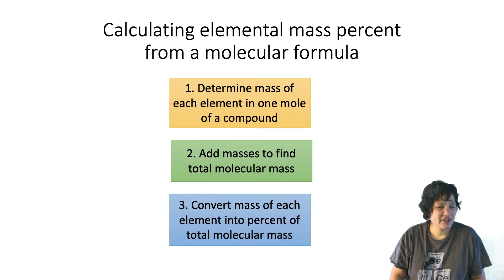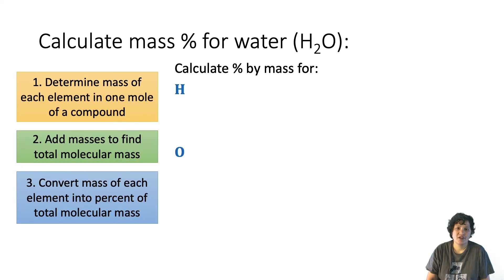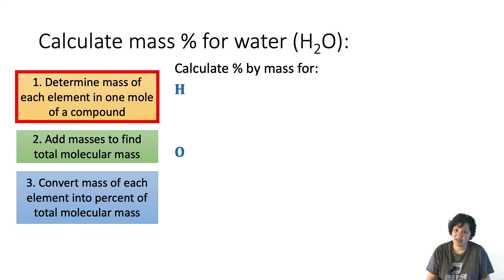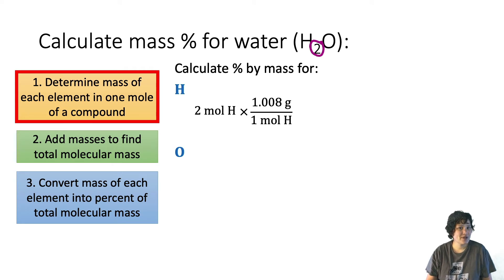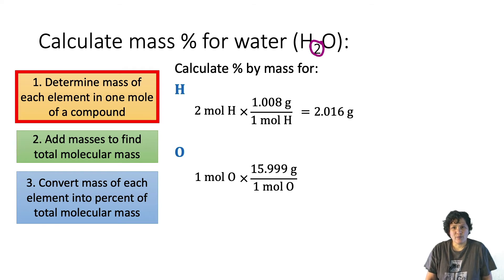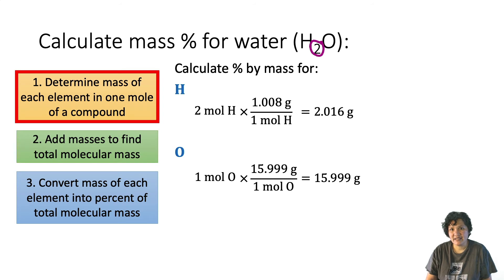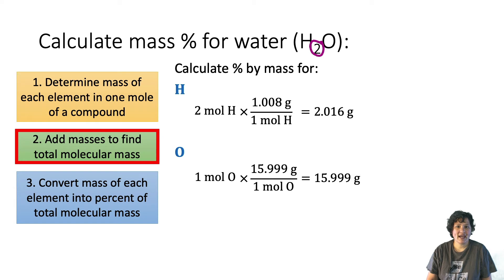This will make more sense once we've put these steps into action, so let's try a few examples. First, let's calculate the mass percent for each element in water. Water is composed of two elements: hydrogen and oxygen. Step one is to determine the mass of each element in one mole of the compound. Each mole of water has two moles of hydrogen, so we multiply by the molar mass of 1.008 grams per mole, giving 2.016 grams of hydrogen. There's one mole of oxygen per mole of water; multiplying by 15.999 grams per mole gives 15.999 grams of oxygen. Adding those up, the molecular mass is 18.015 grams per mole.